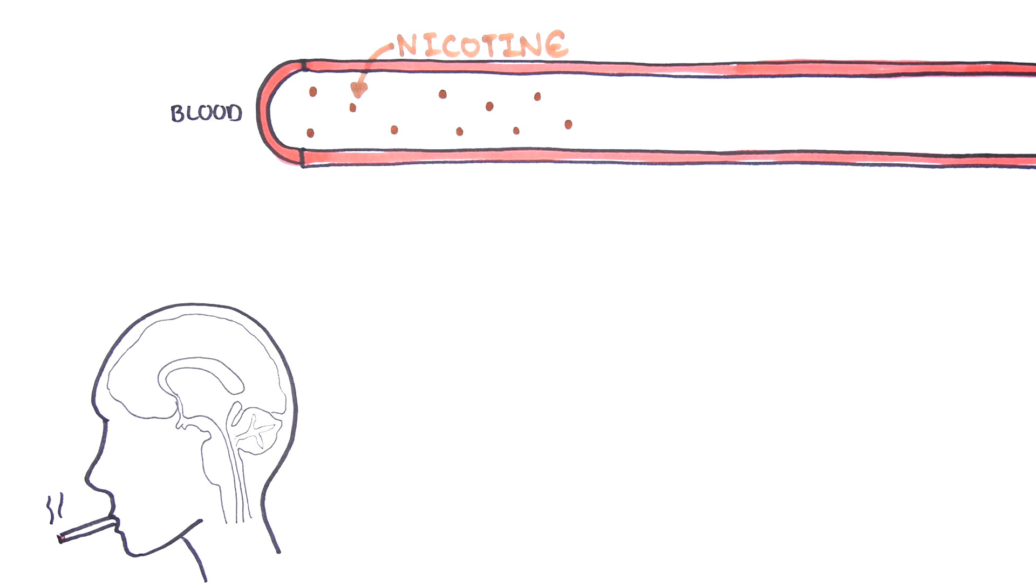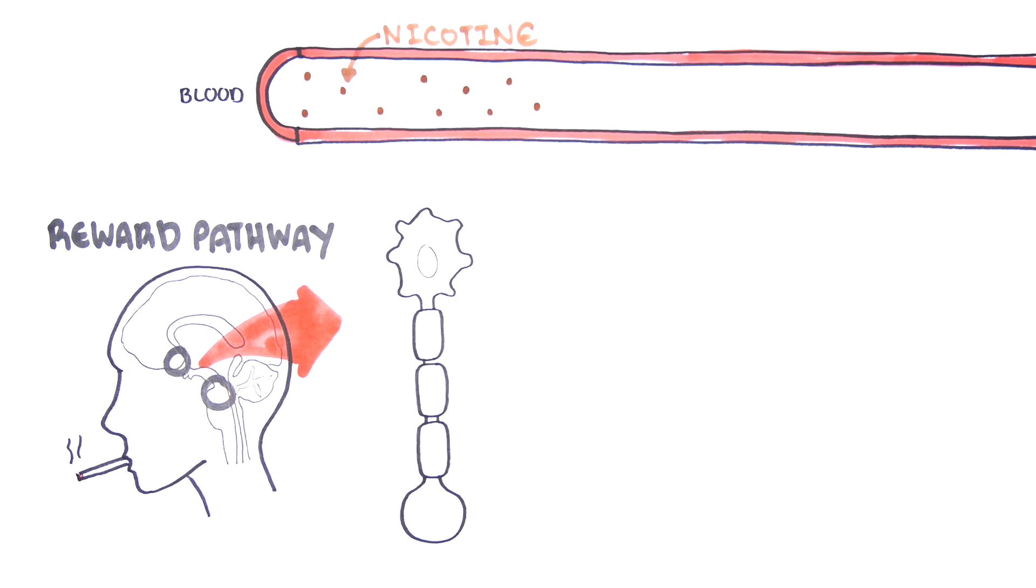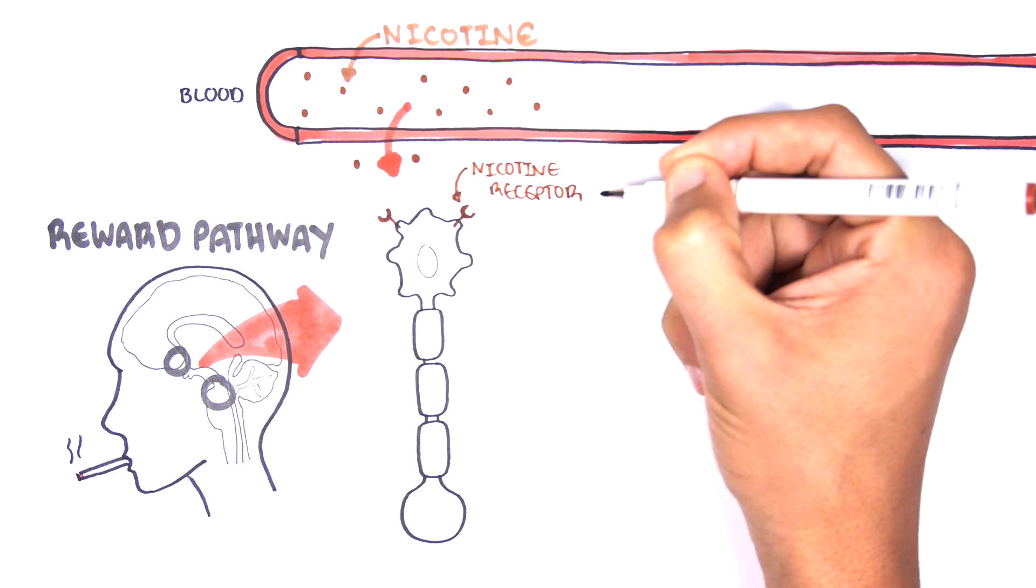Nicotine can influence a pathway in the brain called the reward pathway. Nicotine attaches to nicotine receptors on the surface of brain cells, here called neurons.